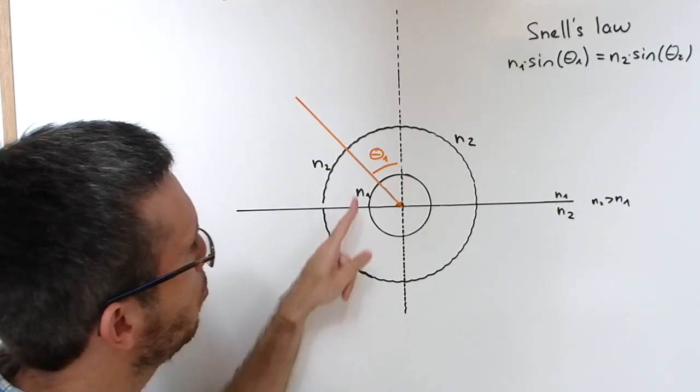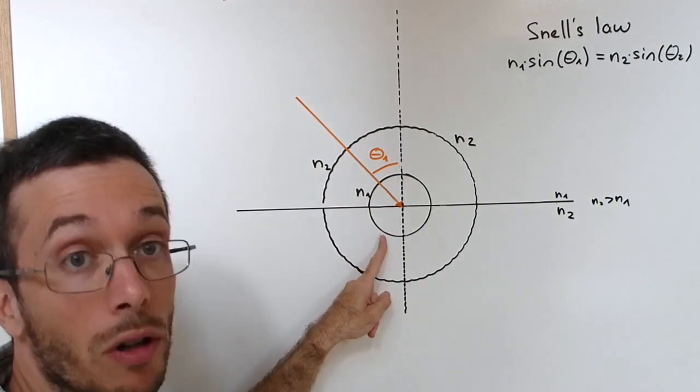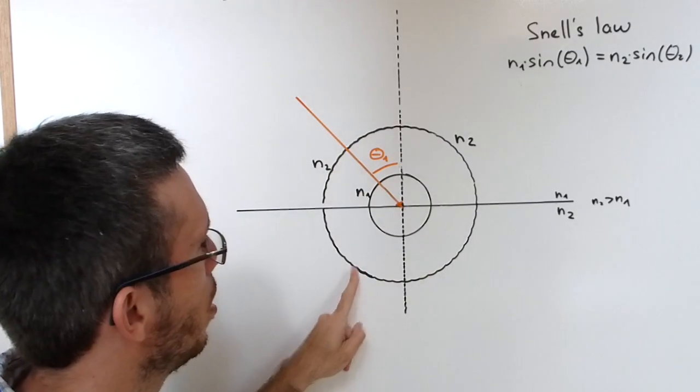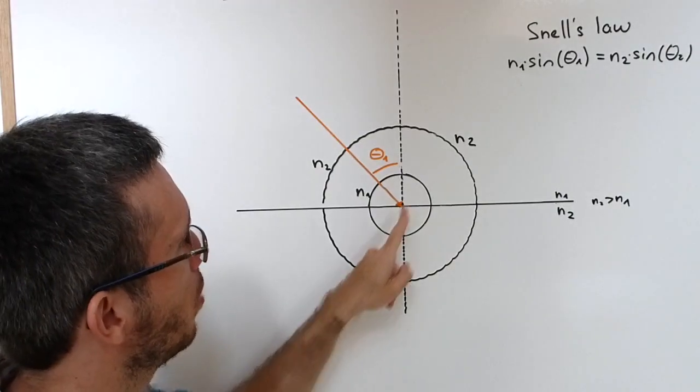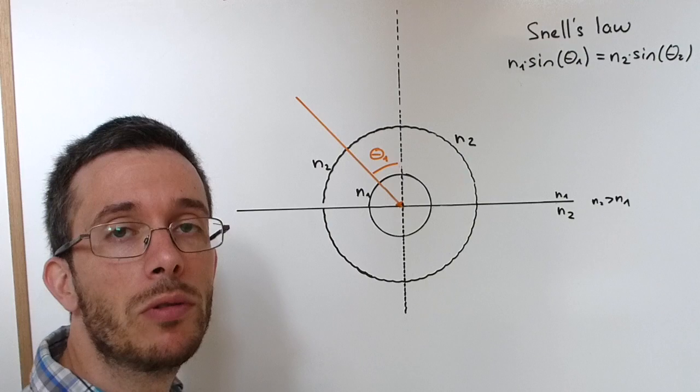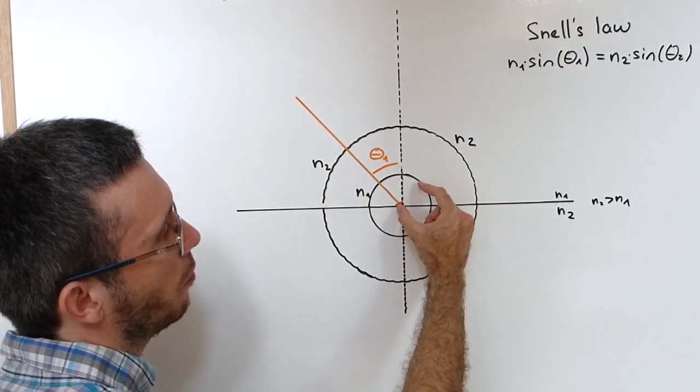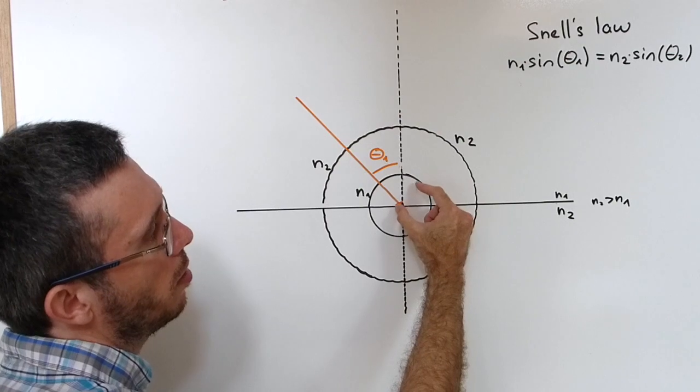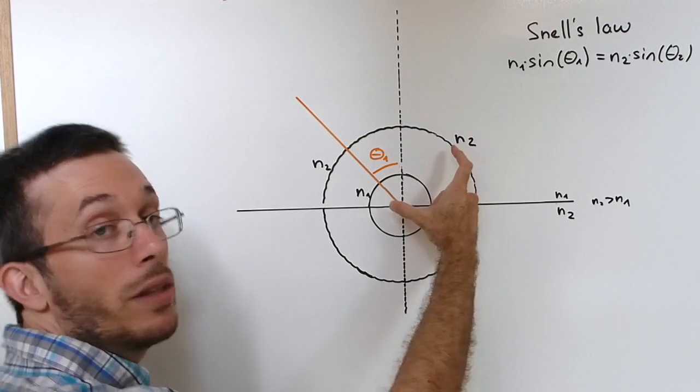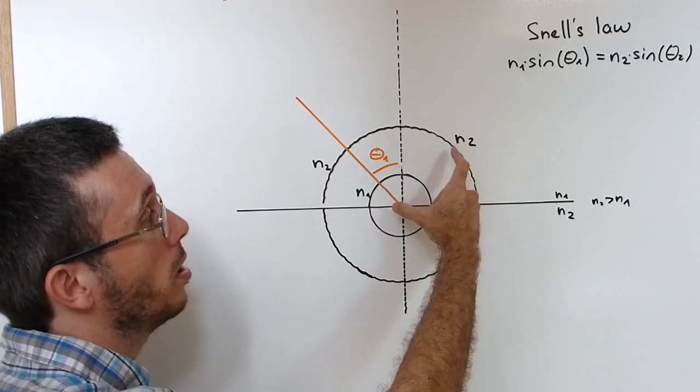So in this method what you have to do first is you have to draw two circles with the radius proportional to the index of refraction. So here I had an index of refraction n1 and about three times bigger an index of refraction n2.